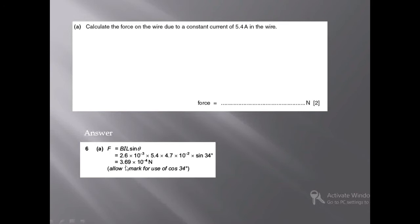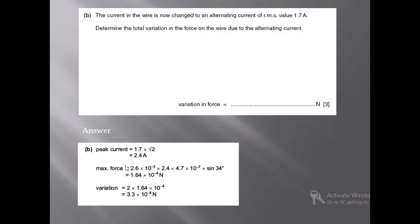We use the formula F = BIL sinθ to solve this question. Part (b) states: the current in the wire is now changed to an alternating current of RMS value 1.7 ampere. Determine the total variation in the force on the wire due to the alternating current.